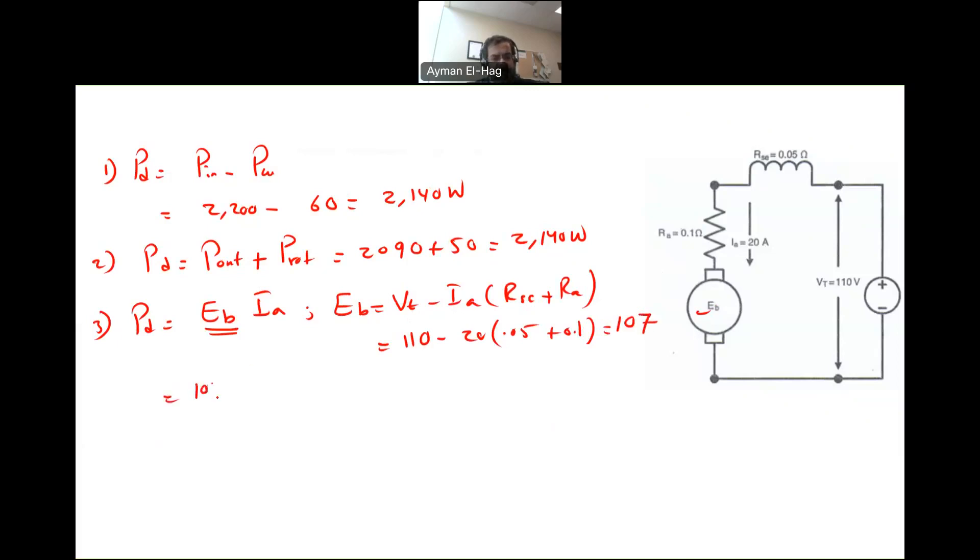So from this, 107 times 20, and this will give me 2140. So whatever method you use, all of them are correct. Now in this question, we have access to all the information. But in many other questions, you will have access usually to only one information, meaning that you can find the developed power using only one of these methods, not all of them. But this question, we have the ability to solve for P developed using all different methods.